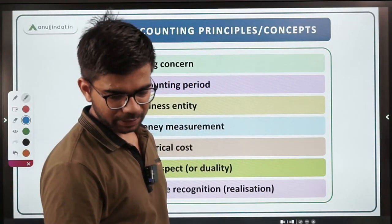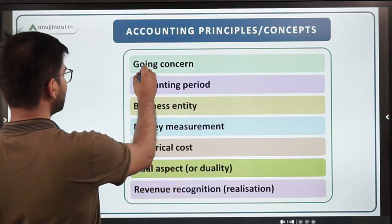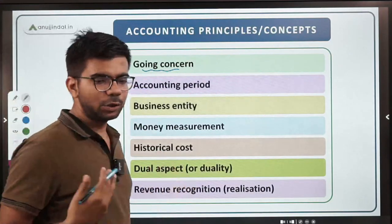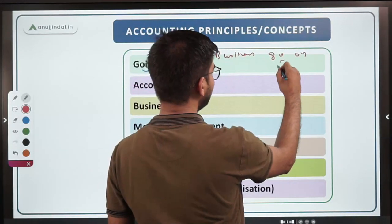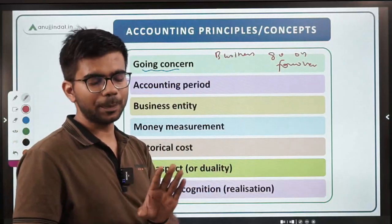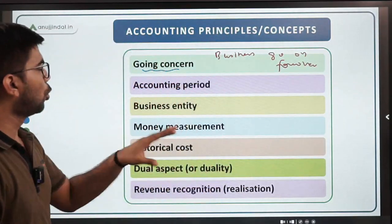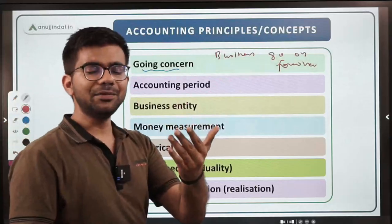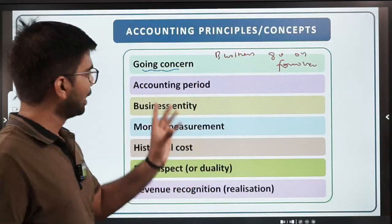Now accounting concepts or conventions. The going concern concept assumes that the business will go on forever — it will not stop in the near future and will continue for a long period of time. Because of this assumption, we divide our accounting books into yearly periods and prepare accounts for one-year periods.